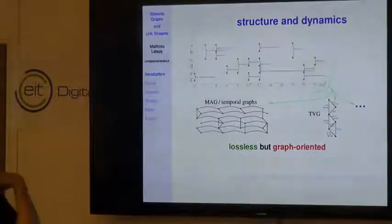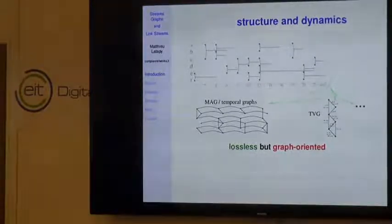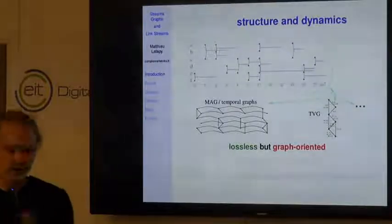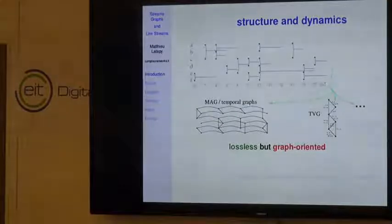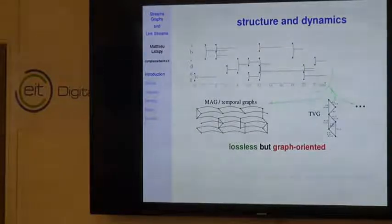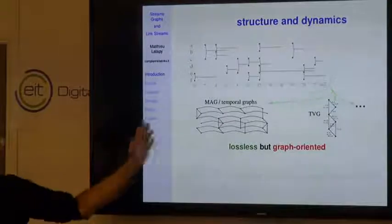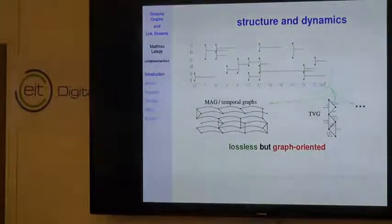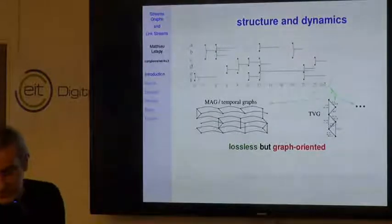In particular, some colleagues work on TVG—time-varying graphs—where they label each node and each link with their time presence, so there is no loss of information. Others duplicate nodes for each time where there is an event, constructing a big graph, calling them temporal graphs, multi-aspect graphs (MAGs), and so on. In all these approaches there is no loss of information, which is a very good point. But they are still graph-oriented: you tend to think of the data as a graph that evolves over time, not as a stream of interactions.